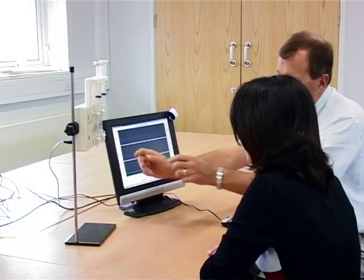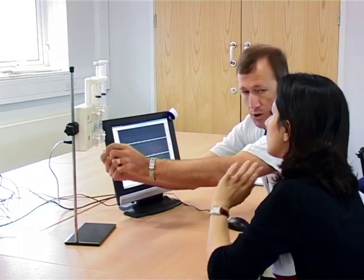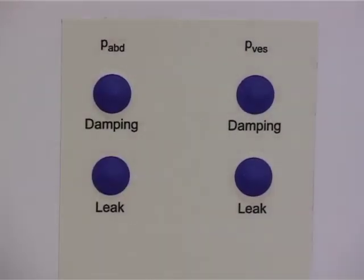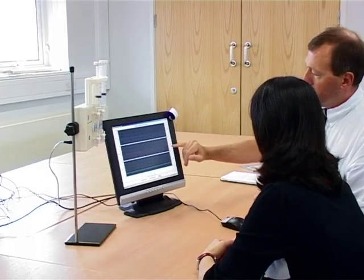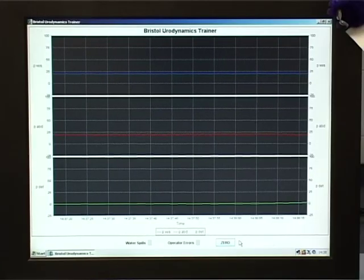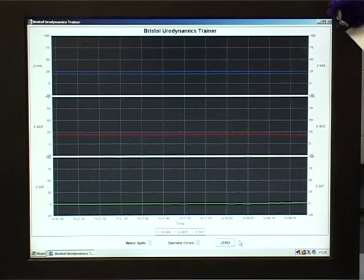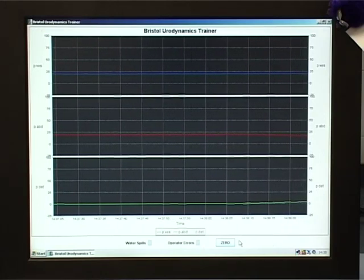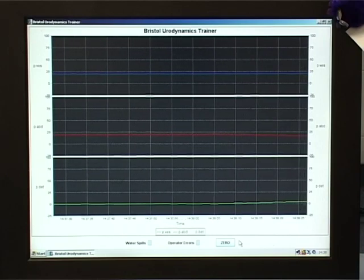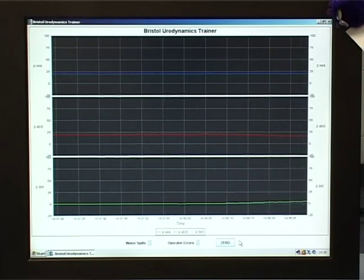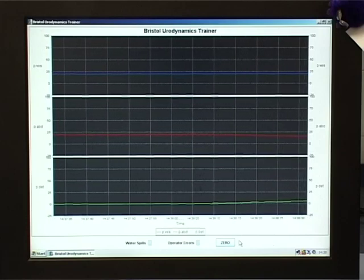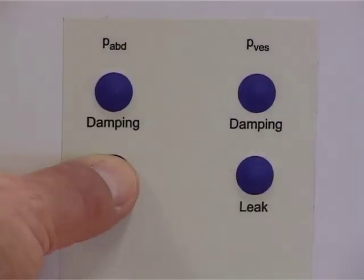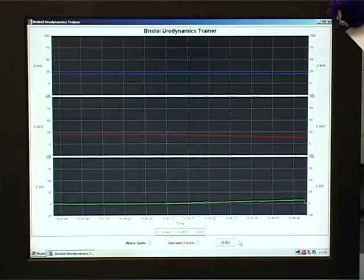Another issue that occurs during real urodynamics testing is a leak in the water line. The trainer simulates this by pressing one of the leak buttons on the rear. The pressure on the selected line will fall slowly as if water is leaking from the system. The trainee will need to recognize this and explain how to remedy the leak. The trainer then presses the leak button again to remove the simulated problem.